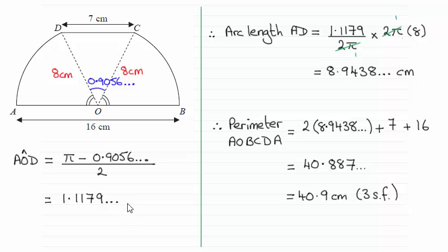Now that enables me to find out the arc length AD, which will be the same as the arc length CB. To get an arc length, all I'm doing is taking a fraction of the circumference of a complete circle. That fraction will be the angle, 1.1179 and so on.